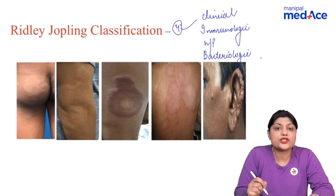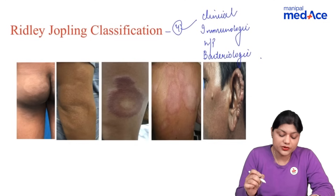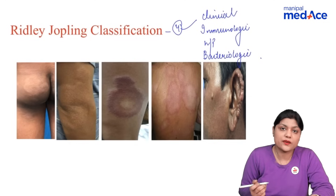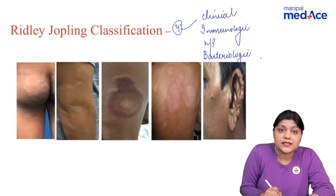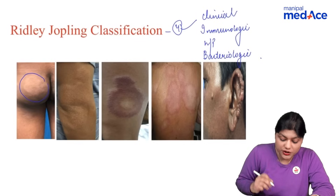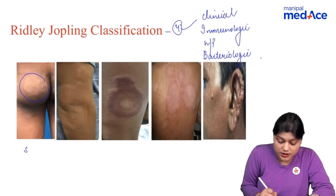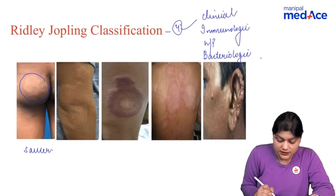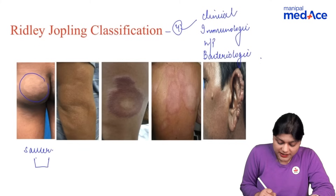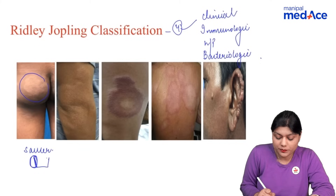In tubercoloid leprosy, patients have one to three lesions. The characteristic lesion is saucer-shaped — the edges are raised and slope downwards.